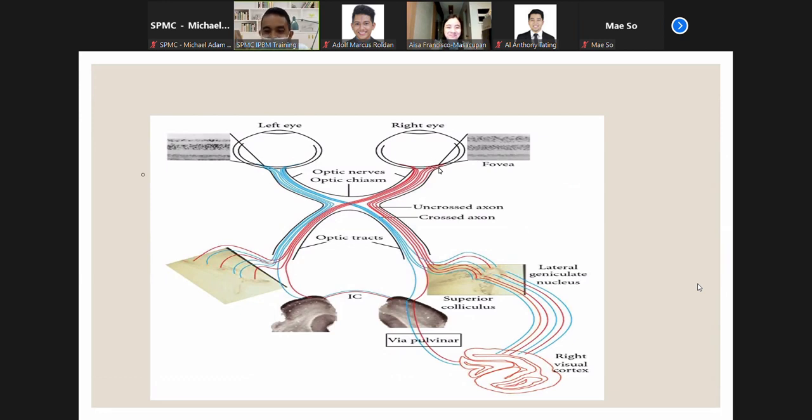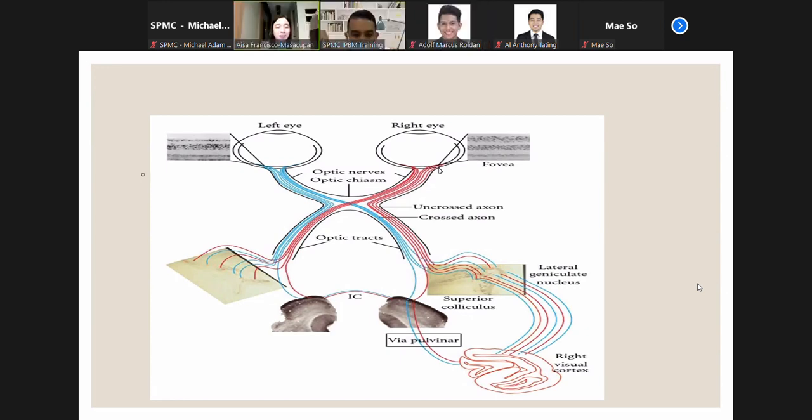Optic nerve fibers cross in the optic chiasm such that the left visual hemifield is viewed by the right hemisphere and the right visual hemifield is viewed by the left hemisphere. That's the point of this picture.